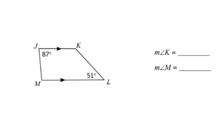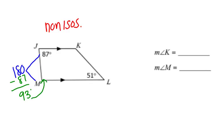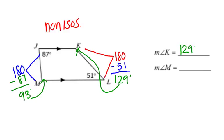It says find the measure of angle K and the measure of angle M. Let's first talk about this. Is this isosceles or non-isosceles? This would be a non-isosceles because my legs right here are not congruent. Then these angles would add to 180. So if I take 180 and subtract 87 to find the measure of angle M, I get 93 degrees. Similar situation here for angle K and angle L. I know that I add to 180. I'm going to subtract 51, so then I end up with a total of 129 degrees.